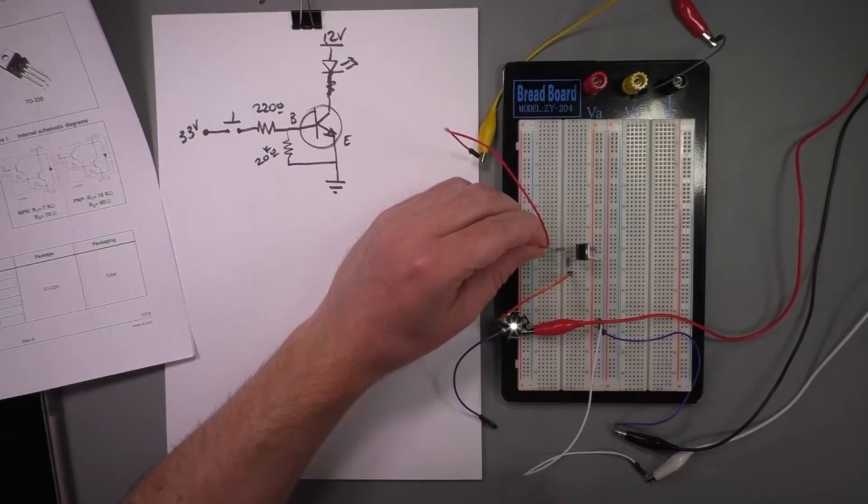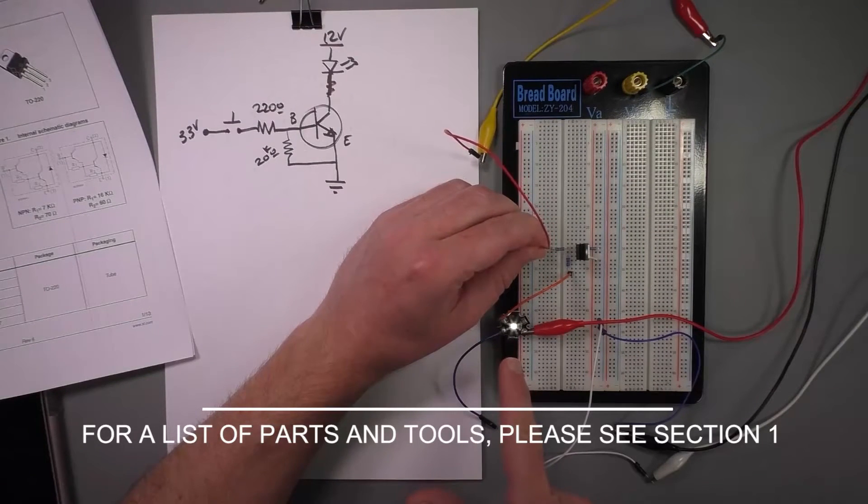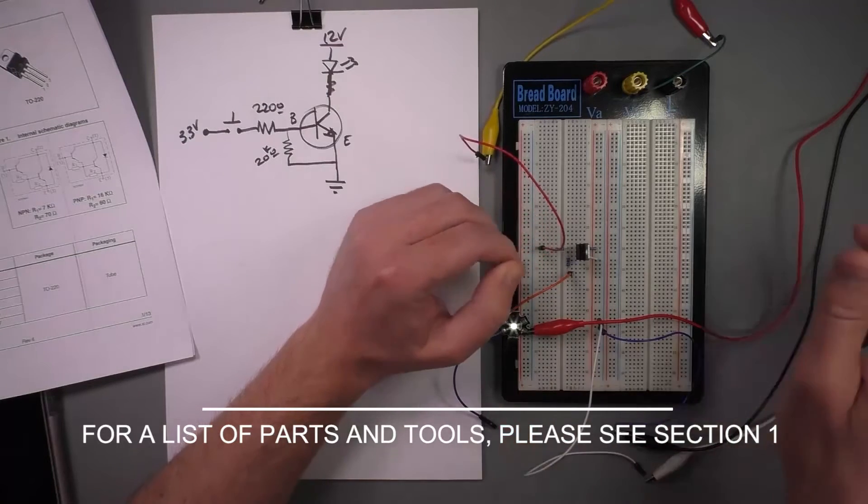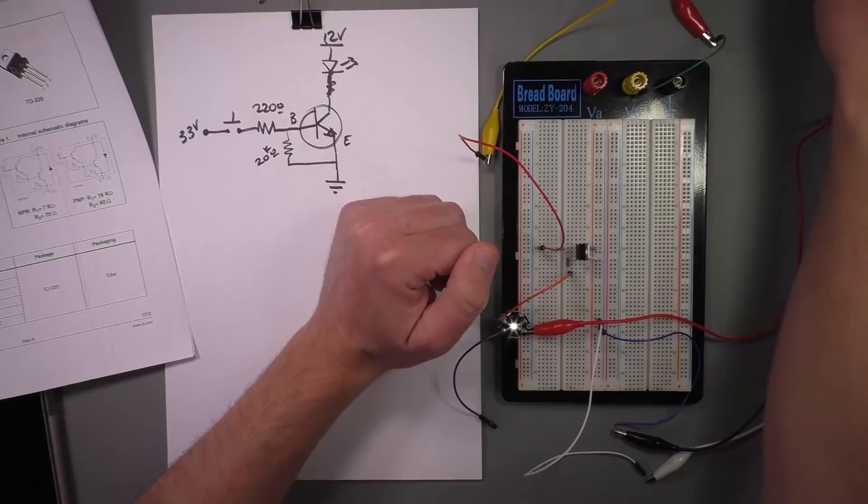To complete this course, you'll need a few easy-to-find and inexpensive components and tools: resistors, capacitors, transistors, LEDs, diodes, and batteries. You'll also need a multimeter, a small breadboard, and jumper wires. All of these are probably things that you already have.